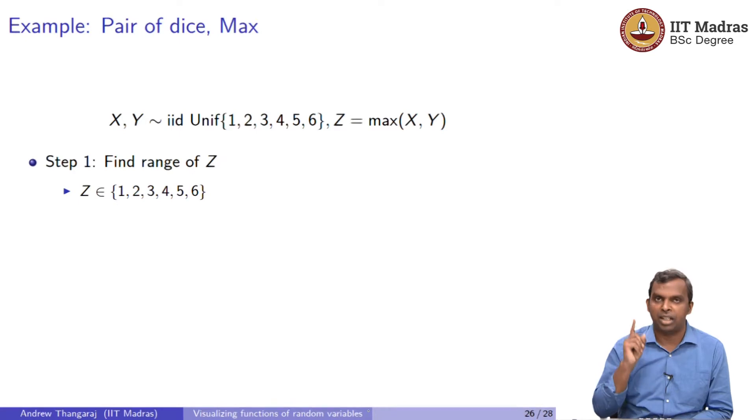The first step is find the range of Z. In this case the range of Z is much simpler. The range is from 1 to 6. Max of any of these two numbers falls between 1 to 6. The max of the two is always going to be 1 to 6.